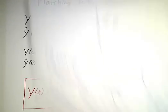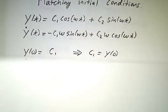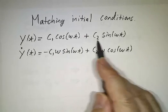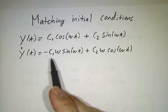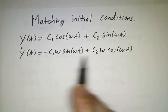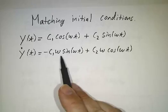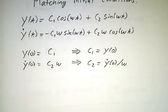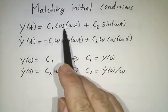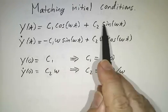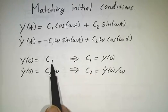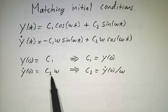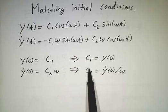The next thing we want to do is match that with our initial conditions. So if y of t is c1 cosine plus c2 sine, then when we take a derivative of that we get minus c1 sine plus c2 cosine times the factor of omega that we get from the chain rule. And then we just plug in values at t equals zero. At t equals zero, cosine is one and sine is zero, so it's c1 times one plus c2 times zero, that's just c1. And y dot is zero plus c2 omega times one. Divide by omega and now we've got c1 and c2.